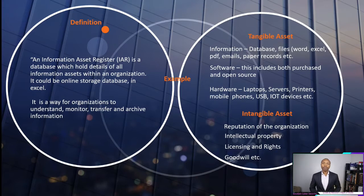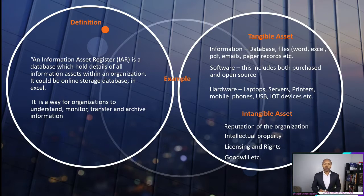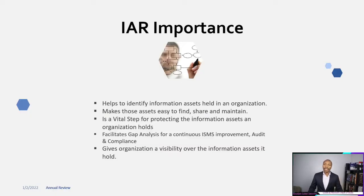There are two types of assets: tangible assets and intangible assets. Tangible assets are physical assets within the organization. Intangible assets are assets that we cannot see or physically identify — for example, the reputation of the organization, intellectual property, licenses, and goodwill of the organization.